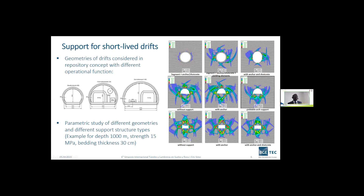If we add a bolt system, we see that this does not add much advantage — we still have a lot of damage and 27% convergence. However, if we use the yieldable arch supports used in German coal mines, we already have less damage and can decrease convergence to 10%.